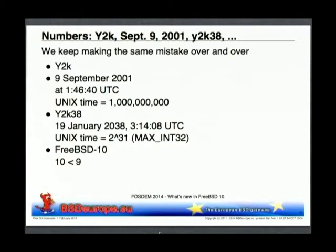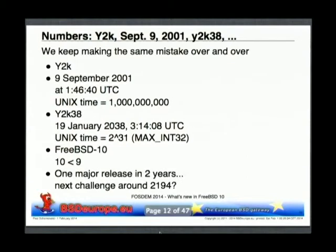We have a major release coming out roughly once every two years. So what's our next challenge? Around 2194, FreeBSD 99 becomes FreeBSD 100. Brace yourself.